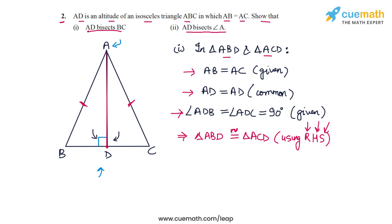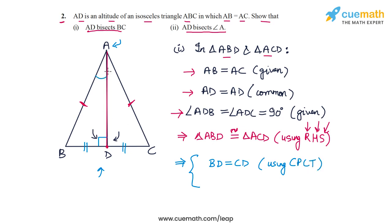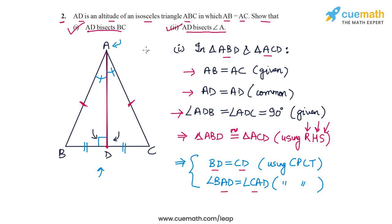Now that the two triangles are congruent, we apply CPCT. First, we can say BD equals CD by CPCT. Second, we can say angle BAD equals angle CAD, again by CPCT. From BD equals CD, this proves that AD bisects BC. From angle BAD equals angle CAD, this proves that AD bisects angle A. So both parts are proven.